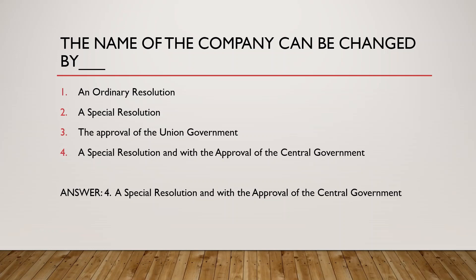The four options for changing a company's name are: one — ordinary resolution, two — special resolution, three — approval of the Union Government, four — special resolution with approval of the Central Government. To change the name of your company, you must pass a special resolution, which requires shareholders' approval in a general meeting through their voting. You also need a second approval from the Central Government. So option four — special resolution with approval of the Central Government — is the correct answer.